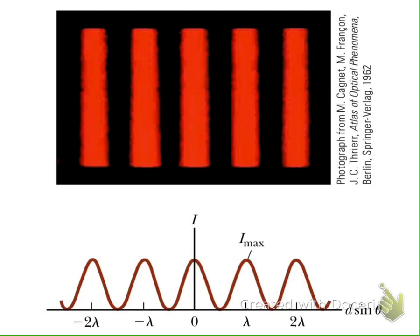We have alternately bright and dark, bright and dark, bright and dark, and it comes from this relation. It comes from this relation — this is a cosine squared function of phi.